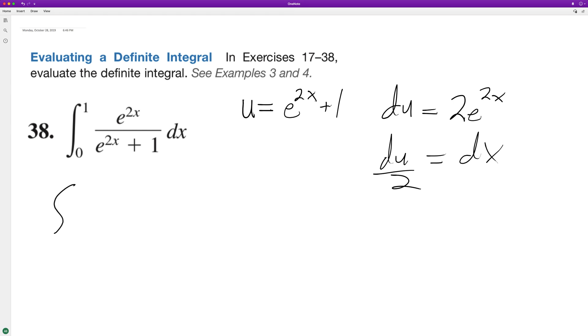So we can set this up: it's going to be 0 to 1, du times one half, and du is over u, so we can put one half out in front. I know this is a little confusing.